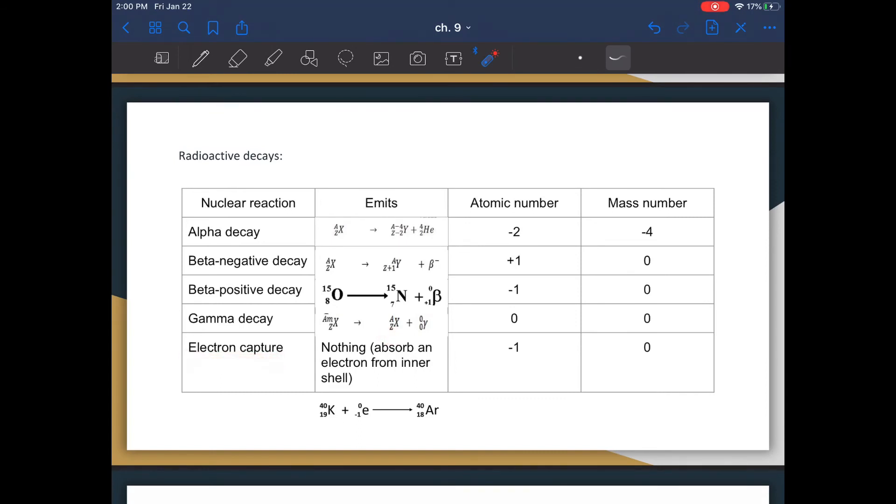Electron capture is when electrons are captured from the outside world. And so because of this electron capture, you'll turn a proton into a neutron, turning the positive charge into a neutral charge. And so you'll have an atomic number decrease by one, but your mass number will remain the same.